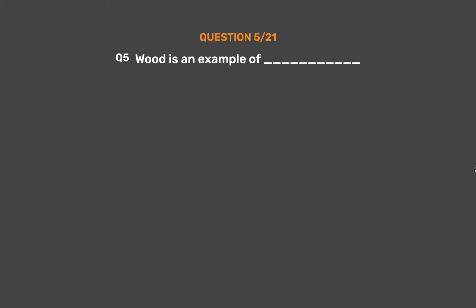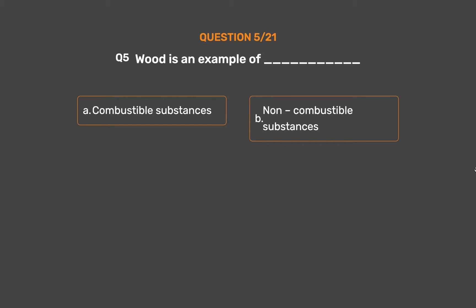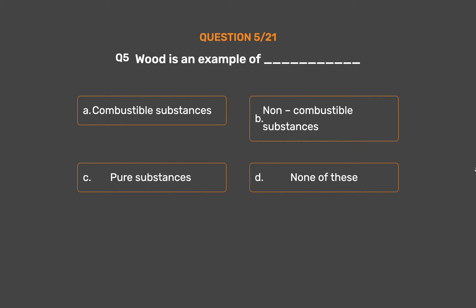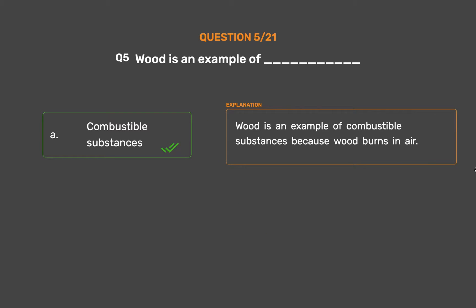Question number 5: Wood is an example of _____. Option A: Combustible substances. Option B: Non-combustible substances. Option C: Pure substances. Option D: None of these. The correct answer is Option A: Combustible substances. Wood is an example of combustible substances because wood burns in air.